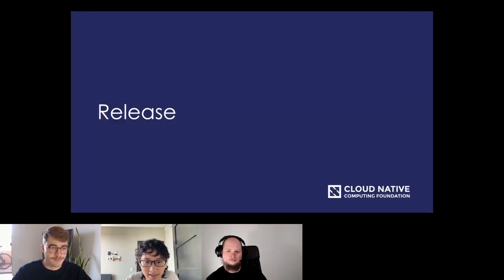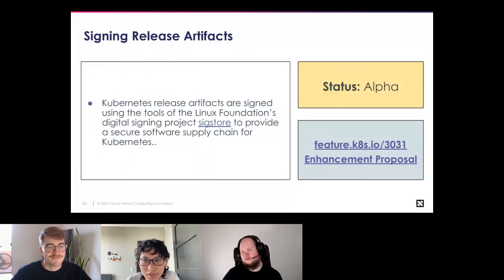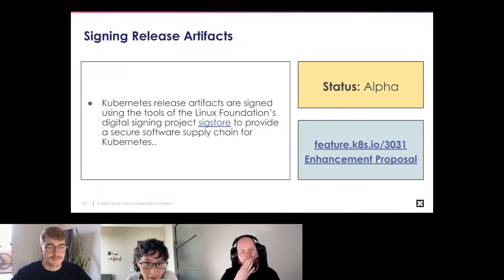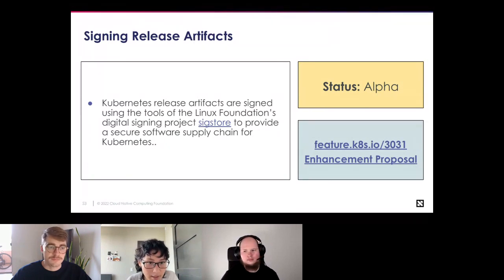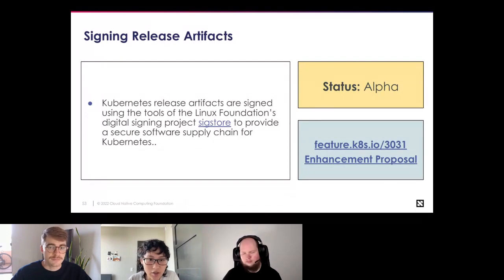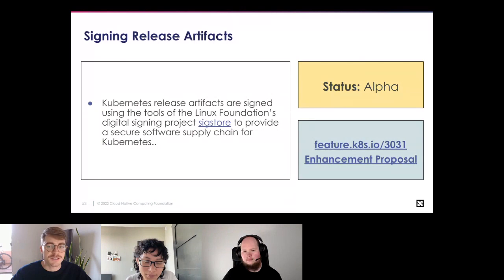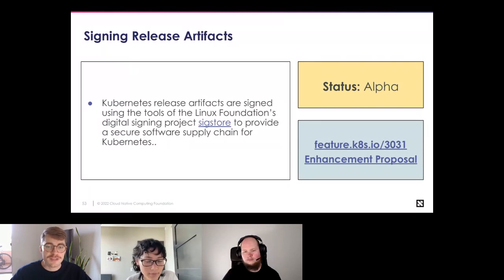SIG Release has one enhancement — signing release artifacts, currently in alpha. The SIG Release team is creating a framework around tooling for how release artifacts should be signed, using the Linux Foundation's Sigstore project. The goal is to support a secure software supply chain and provide end users the ability to verify the integrity of everything they download. This also helps the Kubernetes project achieve greater compliance with the SLSA standard.